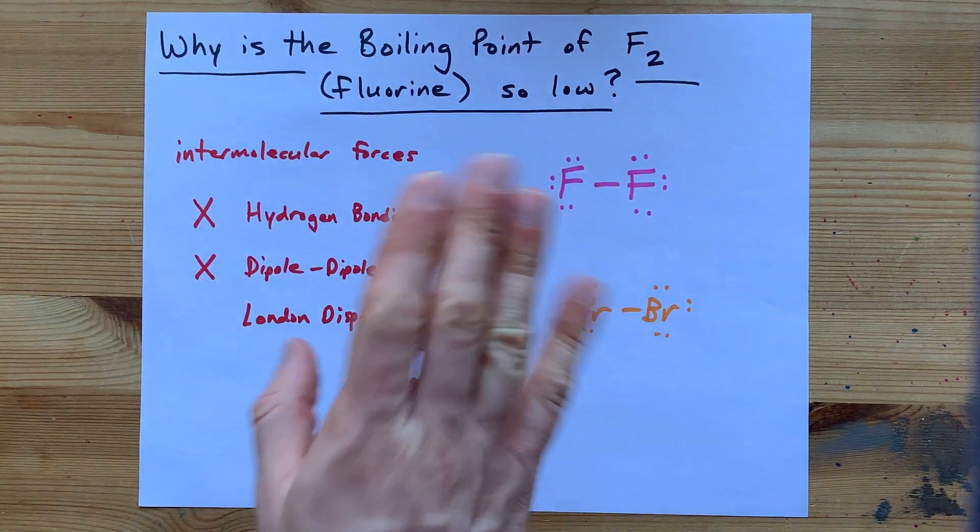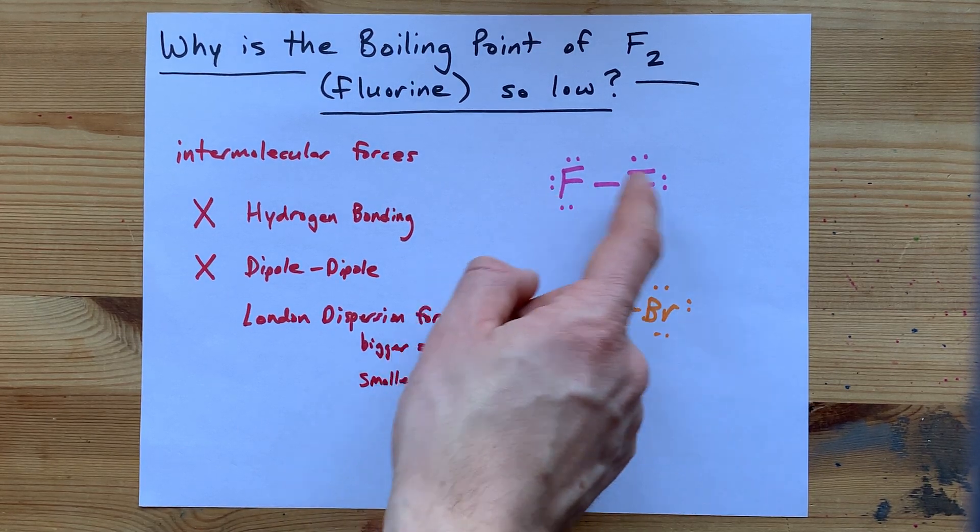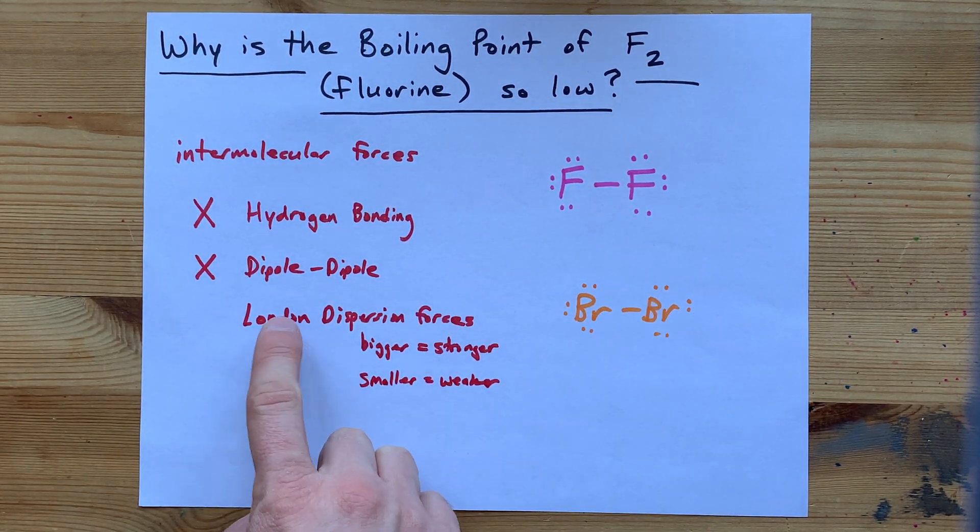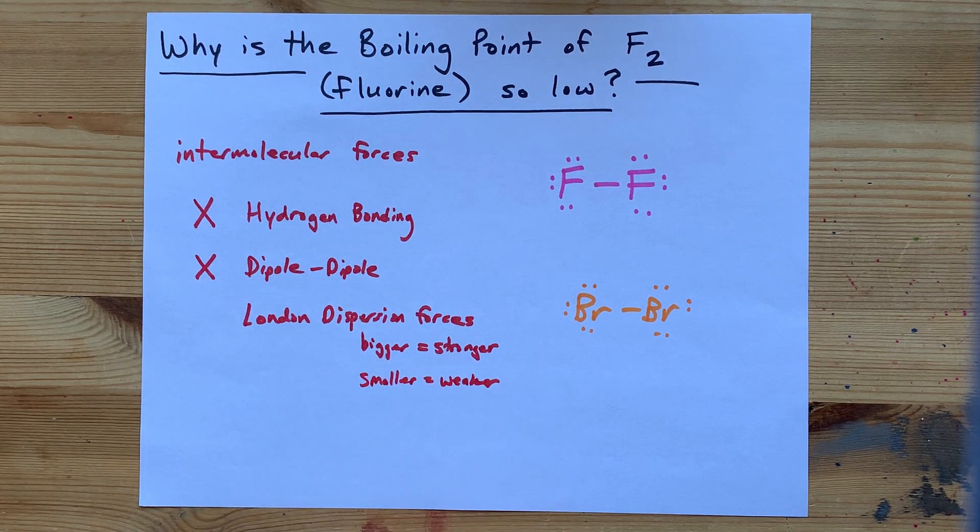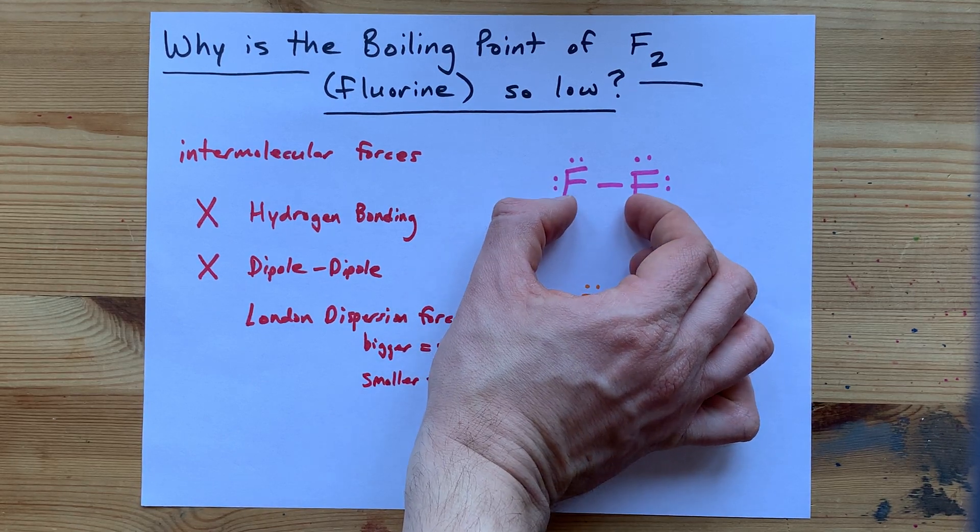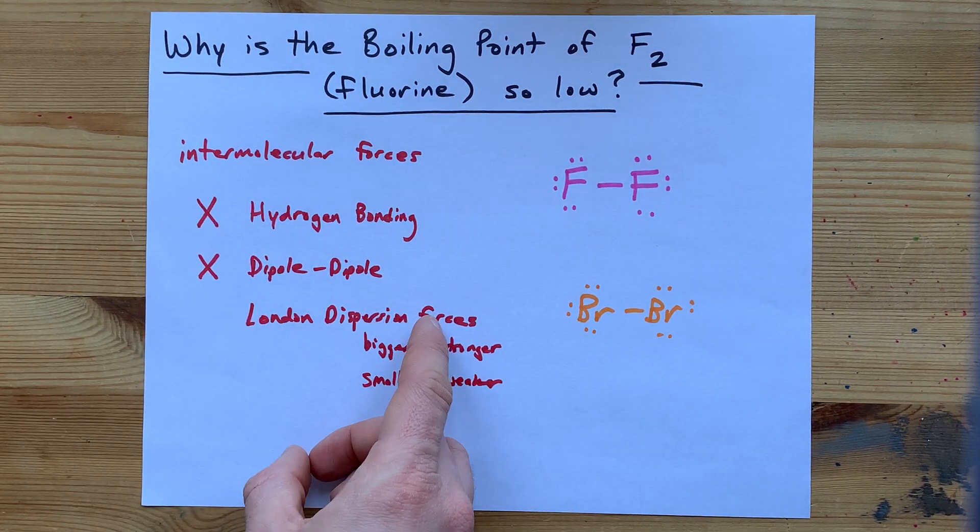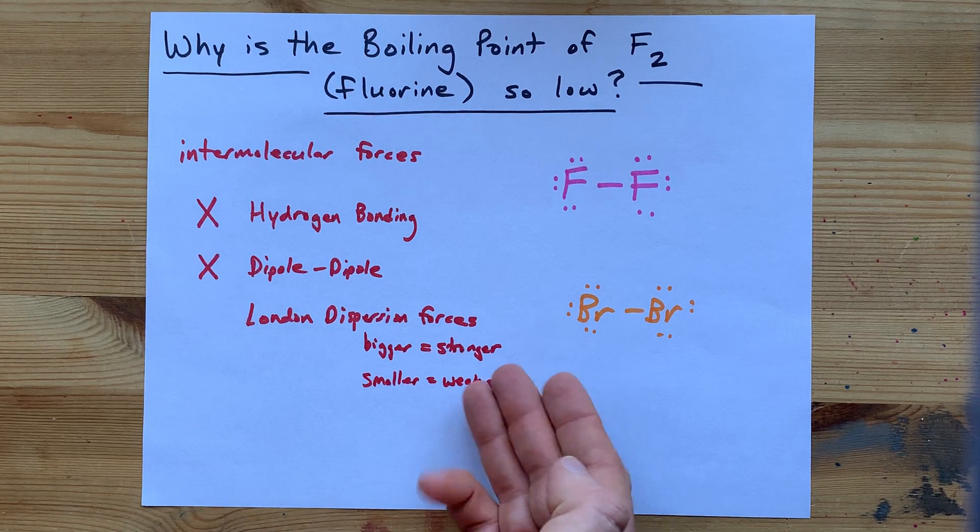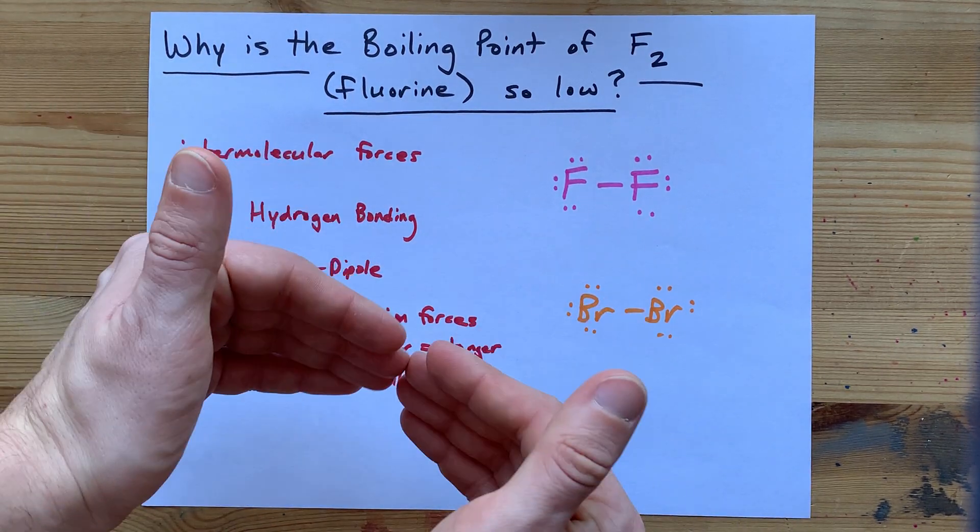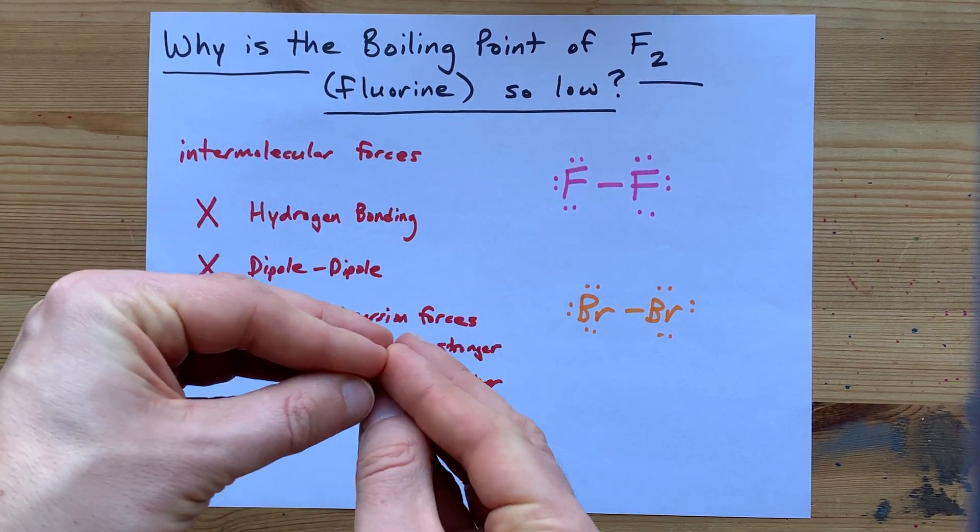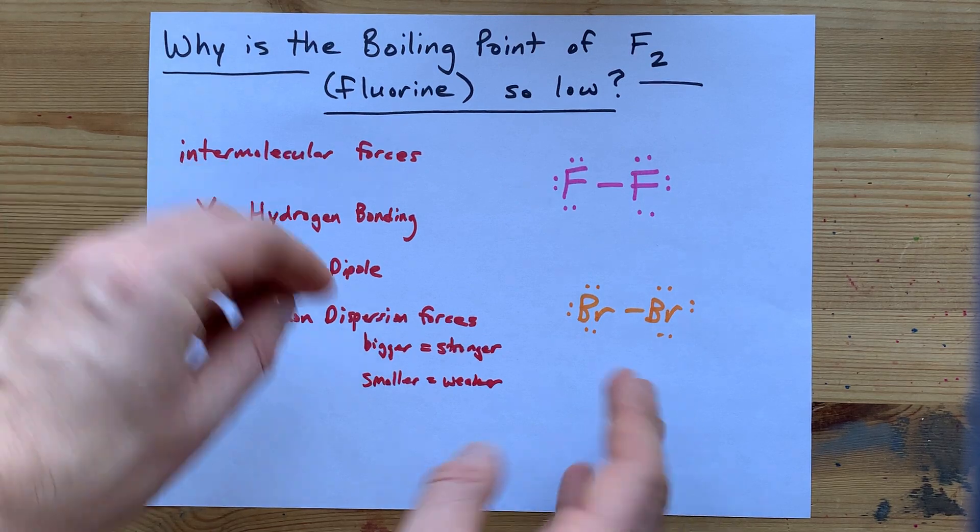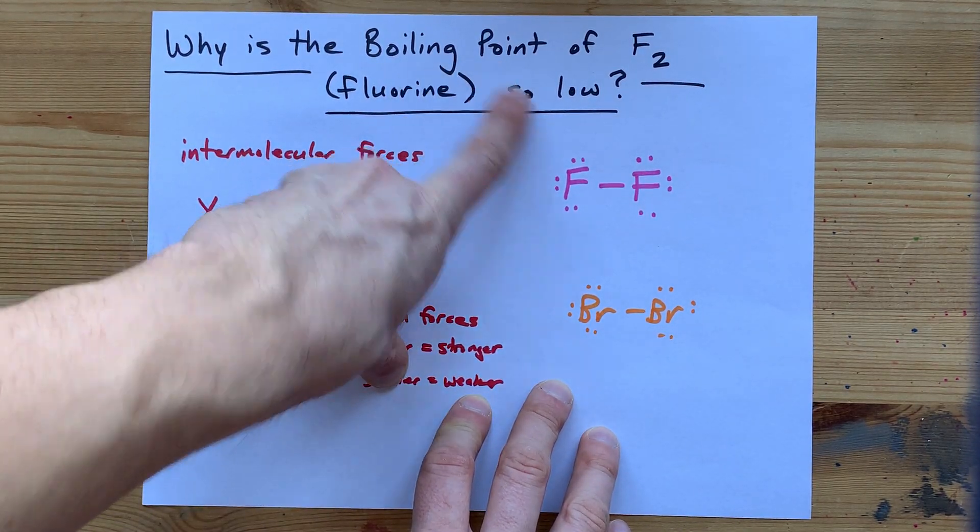So, the answer your teacher wants to hear is that fluorine molecules only are attracted to each other by London dispersion forces. And fluorine F2, the molecule itself, is so small that the London dispersion forces themselves are actually pretty weak. This means that the molecules don't have much attraction to each other, and so it takes hardly any energy to break them apart, and that's why the boiling point is low.